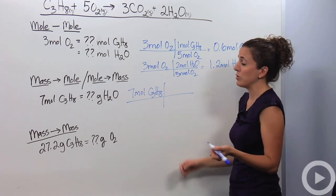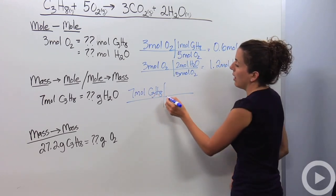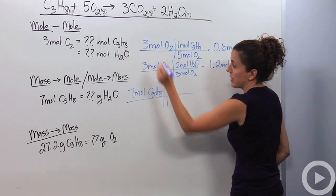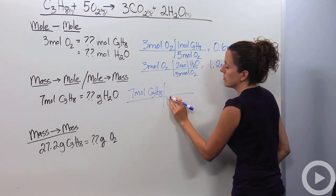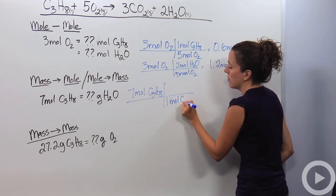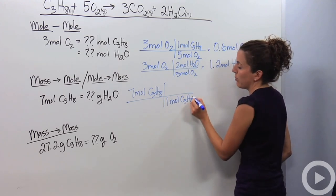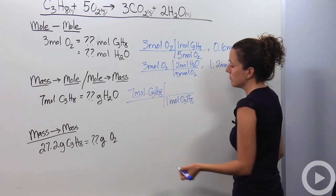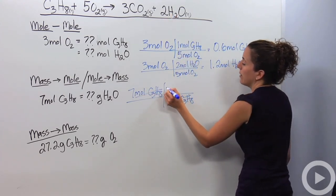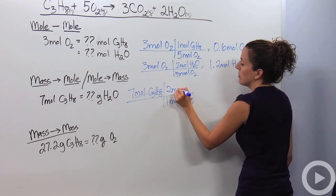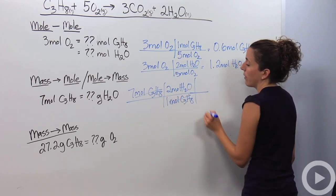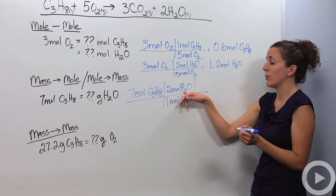I'm going to do a molar relationship and do the mole ratio. If I have 1 mole in my reaction, I look and I just have 1 mole of C3H8 and I put it in the bottom so that these can cross out. And it produces 2 moles of water. But I'm not looking for moles, I'm looking for grams. I'm going to go a step further.